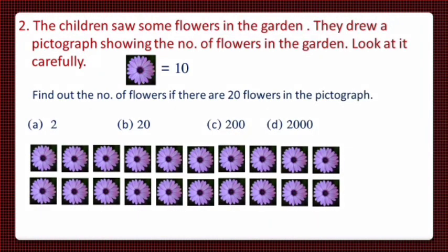We will find the total flowers if the pictograph has 20 flowers. So, for this, we have to multiply. Yes, we will multiply 20 and 10. When we will multiply 20 with 10, the answer will be 200. So, 20 flowers in the pictograph show 200 flowers. Children saw 200 flowers in the garden.